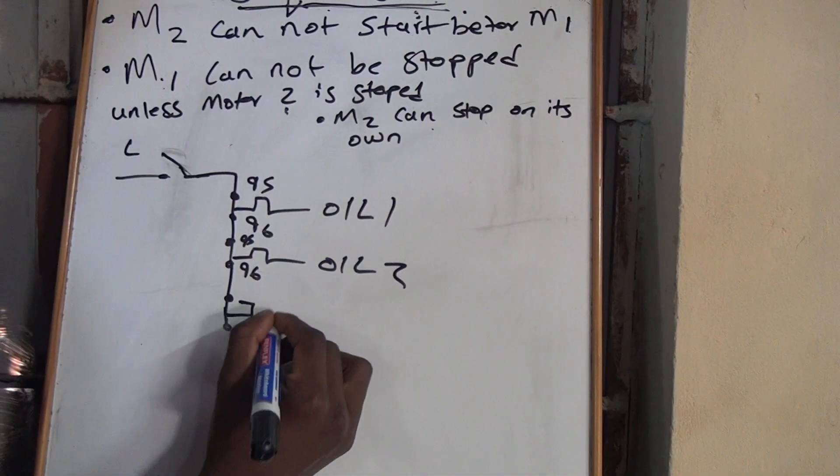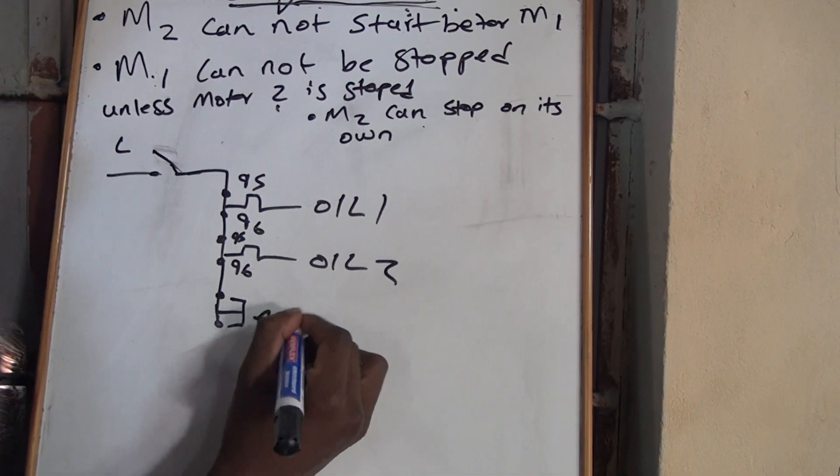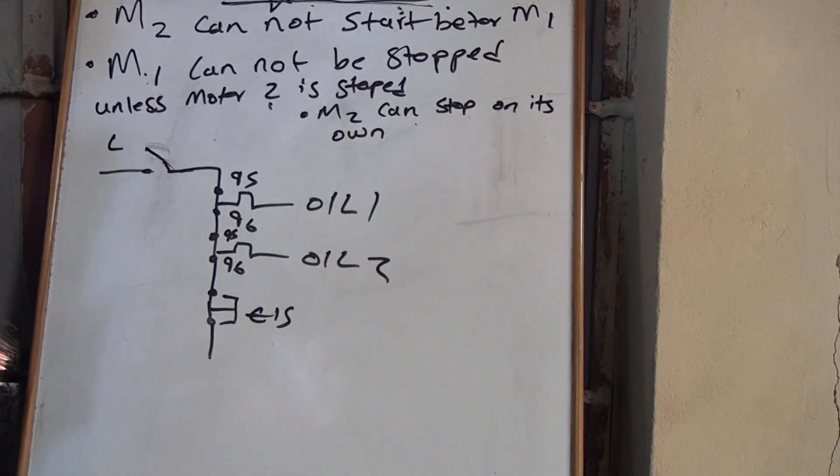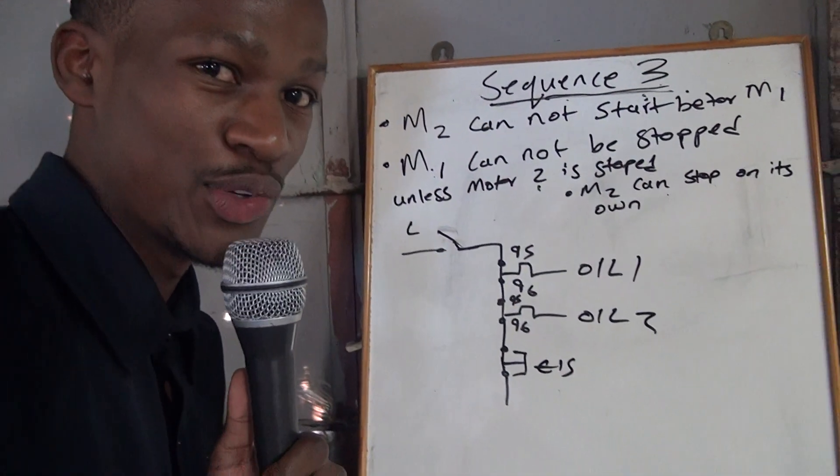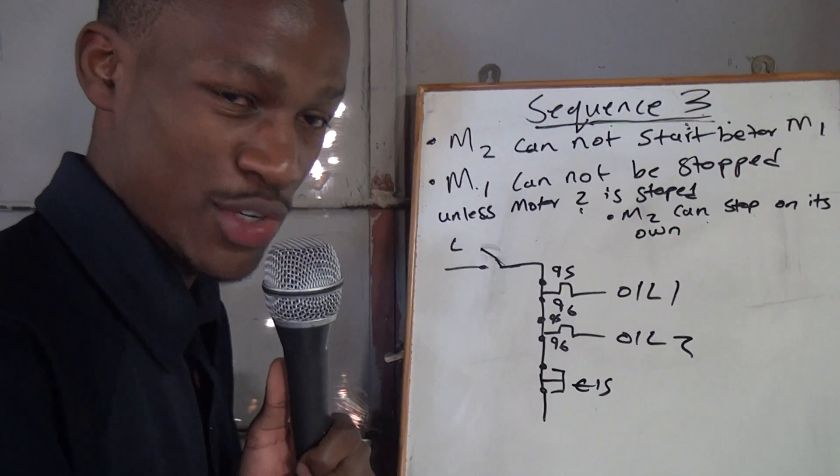And then you have your emergency stop. And remember always the emergency stop must stop everything. Remember what I said. Always first draw your direct online on both of them. Then you can come and do whatever that you need to do.